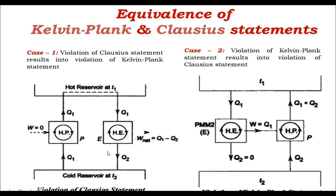This is a very interesting case. This combination of heat pump and heat engine has become a perpetual motion machine of the second kind, because it is exchanging heat with a single reservoir and generating work while doing so. This is not possible according to the Kelvin-Planck statement — it means this combination violates the Kelvin-Planck statement. So, we had assumed that the Clausius statement was violated and went on to prove that this leads to the violation of the Kelvin-Planck statement. Therefore, the Clausius statement and Kelvin-Planck statement mean the same.